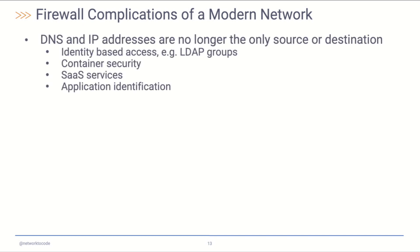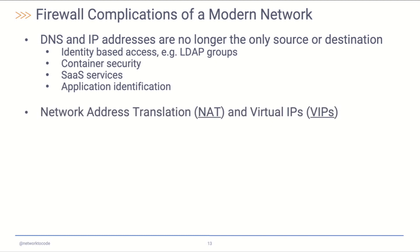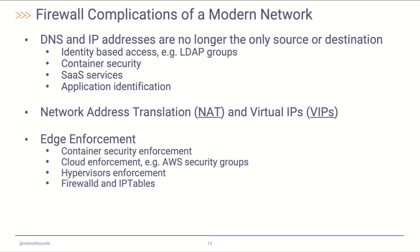Some of the complications of a modern network: no longer is source and destination IP and DNS the end-all be-all for what those objects can be. There are things like LDAP groups, container services, App-ID, SaaS services. NAT and VIPs — this is where application owners may not realize that the IPs their servers are on are not the IPs their users need, and to put firewall rules to the VIP, not to their own actual devices. Edge enforcement — there are multiple layers of security, all having a duplication of efforts.